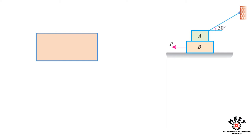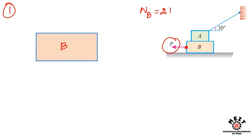This is the problem we need to solve using free body diagrams and the friction concept. To draw a free body diagram, we first need to draw it for the block on which the applied force acts — that is block B, on which force P acts.